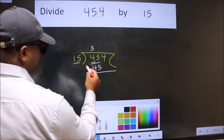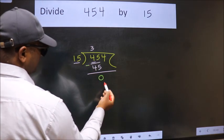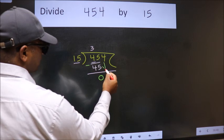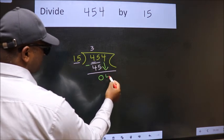Now we should subtract. We get 0. After this, bring down the beside number. So 4 down.